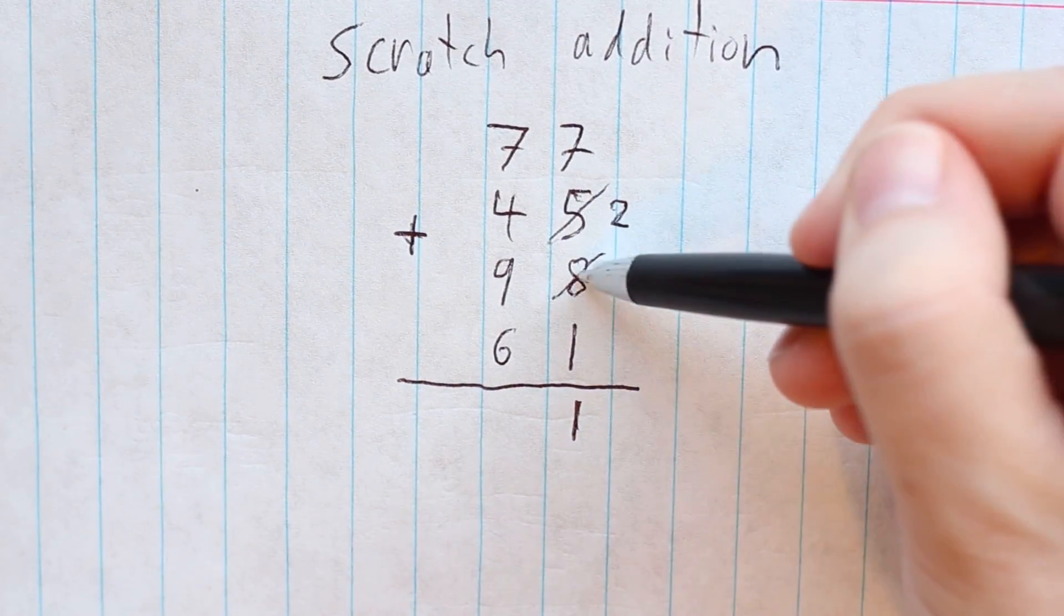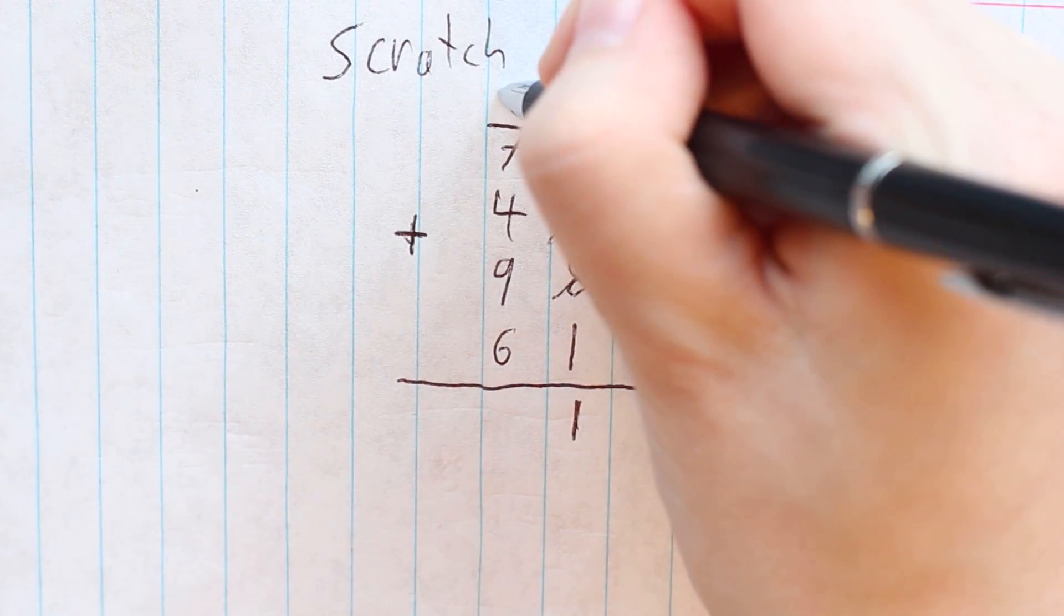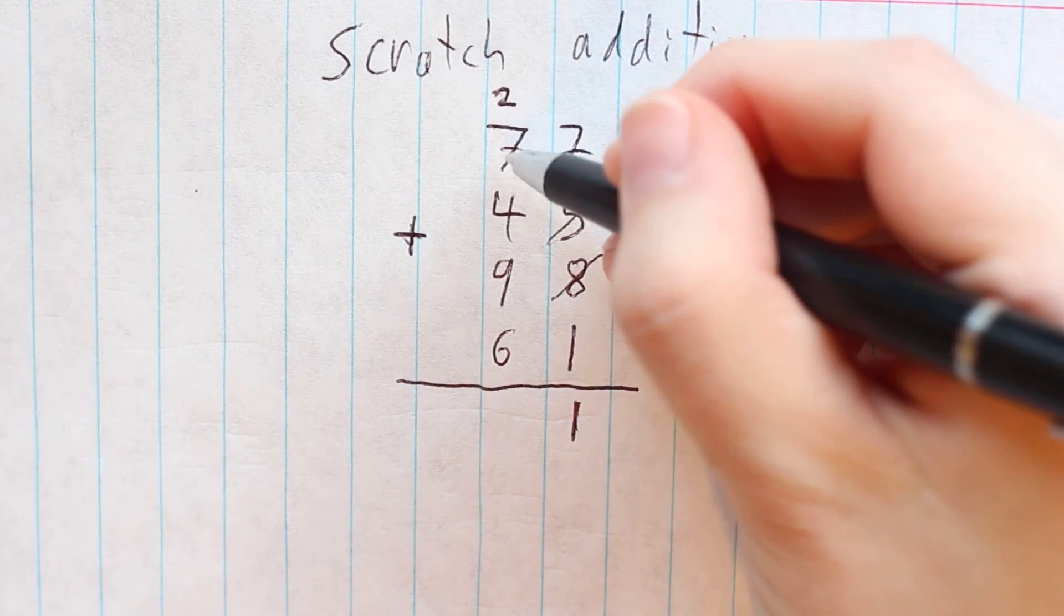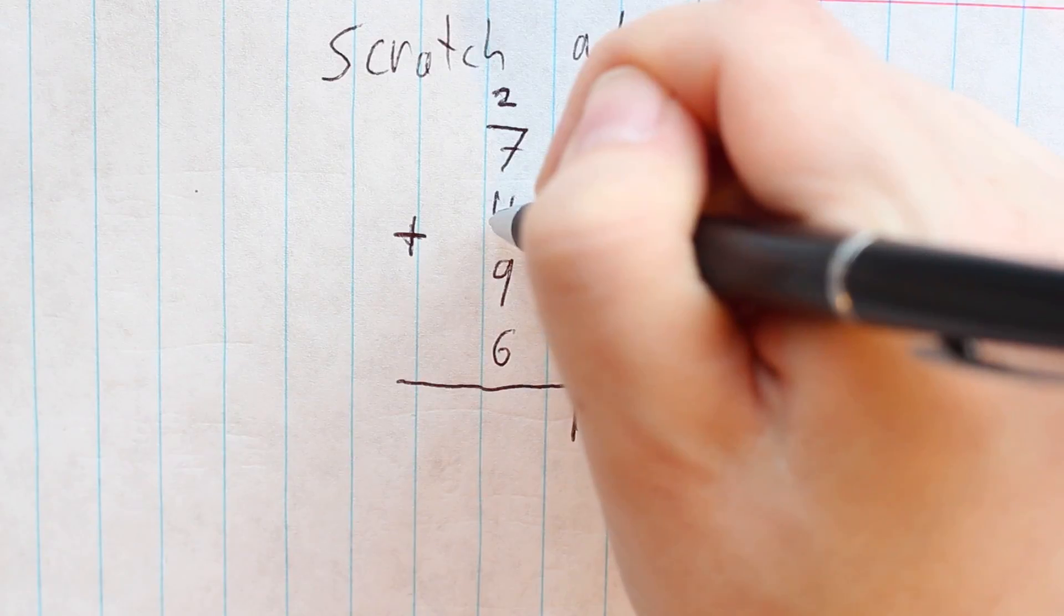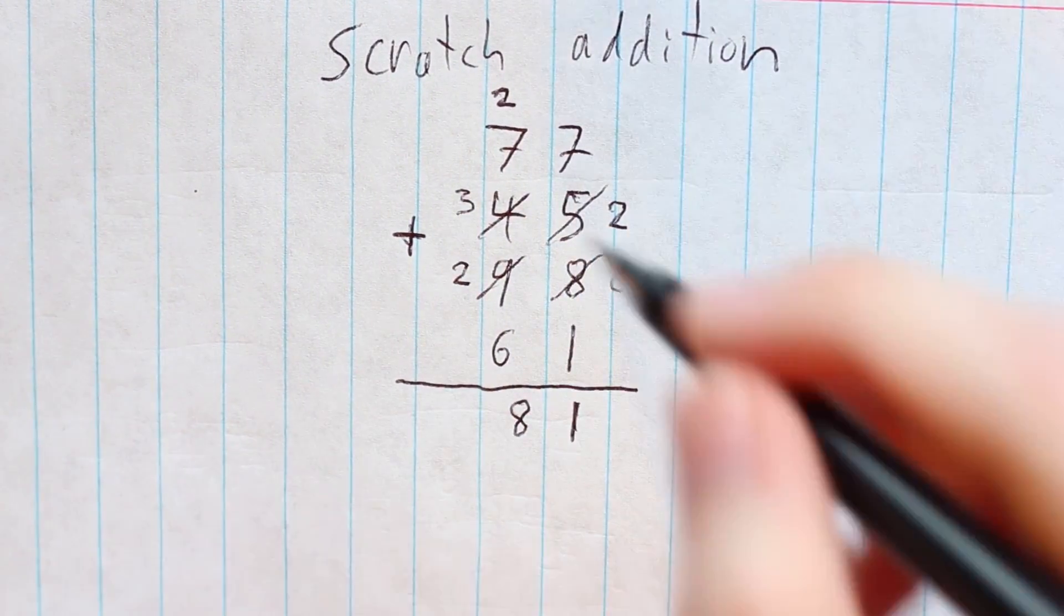Next, you count your scratches, in this case 2, and write that number to the next column and repeat the process, starting by adding 2 plus 7. Each scratch stands for a digit that needs to be carried.